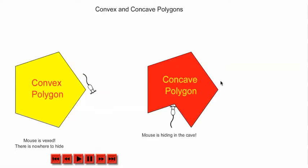This is a concave polygon. The mouse is hiding in the cave. So it's a good way of remembering it, but the actual definition is: